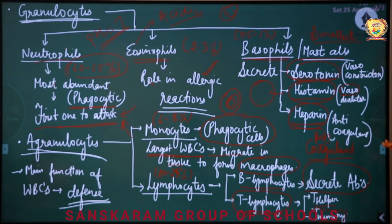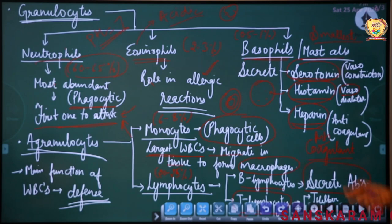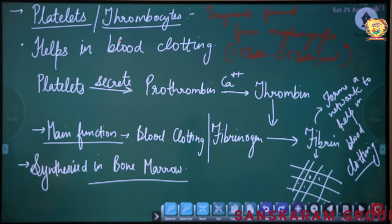Clear — everything about WBCs is clear. Neutrophils are the first to attack and are phagocytic. Eosinophils play a role in allergic reactions. Basophils secrete three chemicals: serotonin, histamine, and heparin. Agranulocytes are of two types: monocytes (phagocytic, become macrophages in tissue) and lymphocytes — B lymphocytes secrete antibodies, T lymphocytes are of two types: helper and memory cells. Helper cells kill microorganisms and memory cells remember infections.